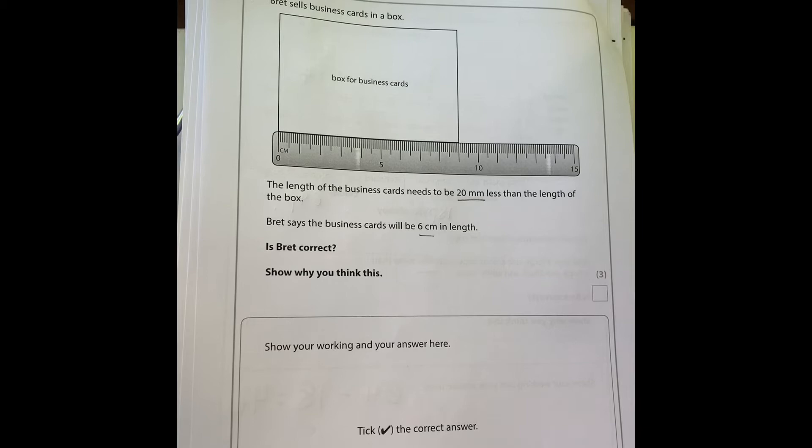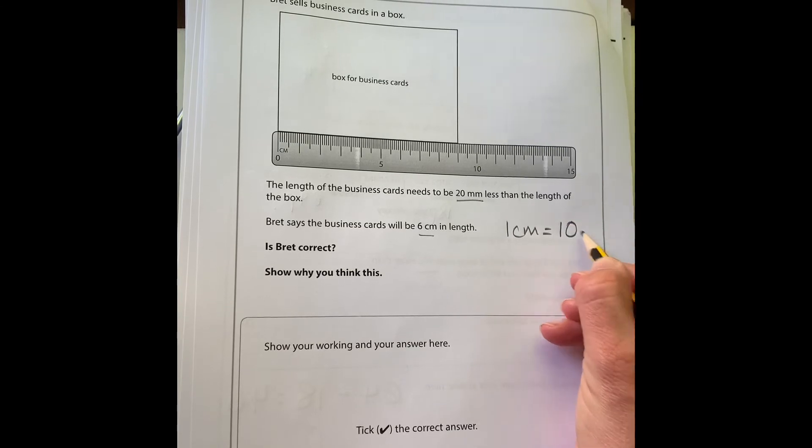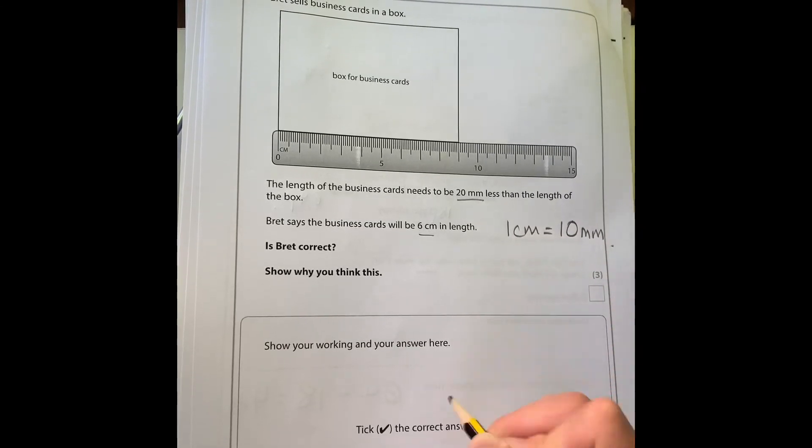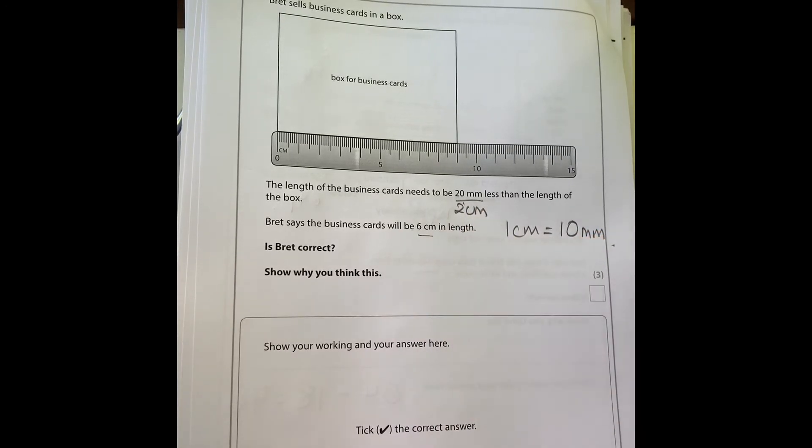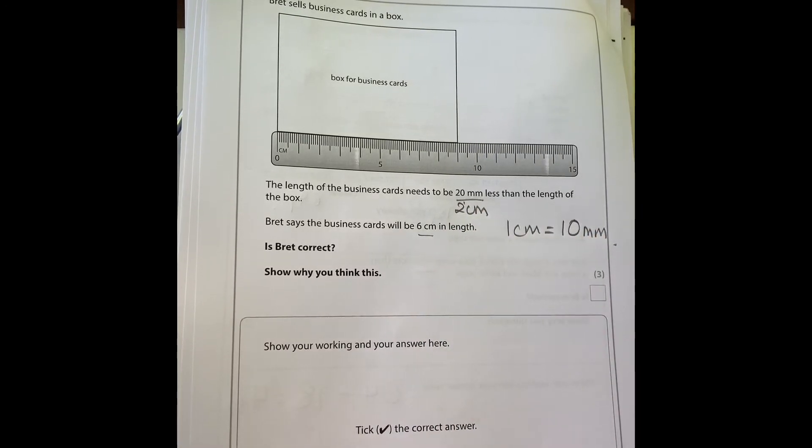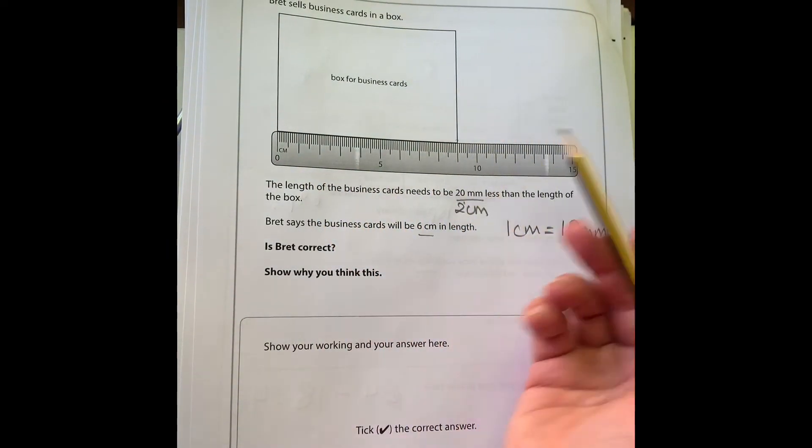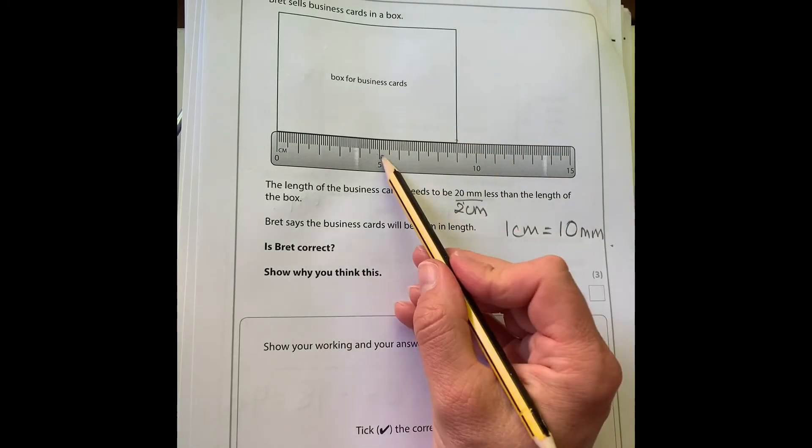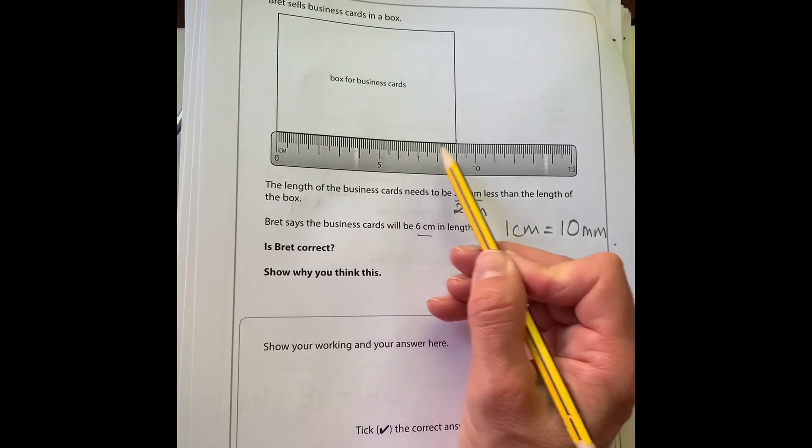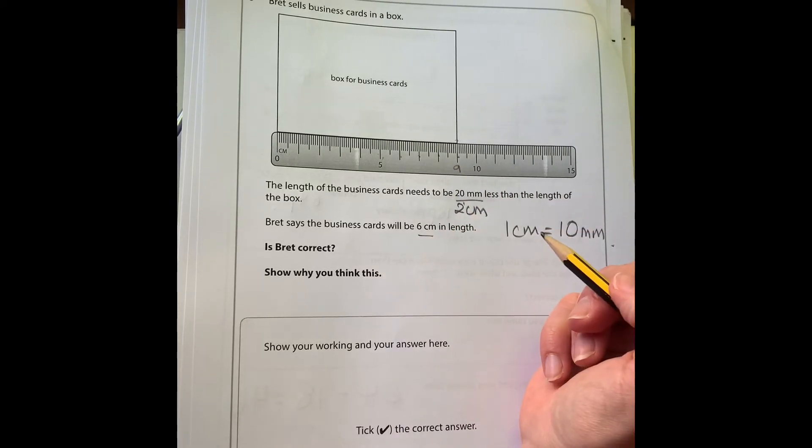Hopefully you know, and if you don't, try and remember that one centimeter is 10 millimeters. So 20 millimeters would be two centimeters. We can read using our ruler the length of the box. We can see here we've got five, six, seven, eight, that would be nine. So nine centimeters.